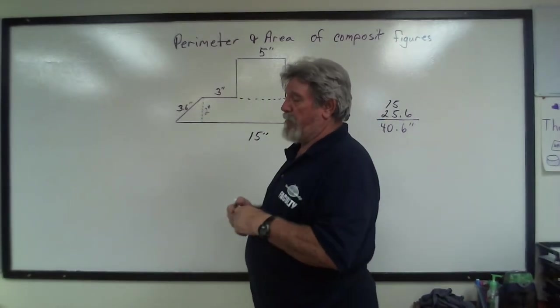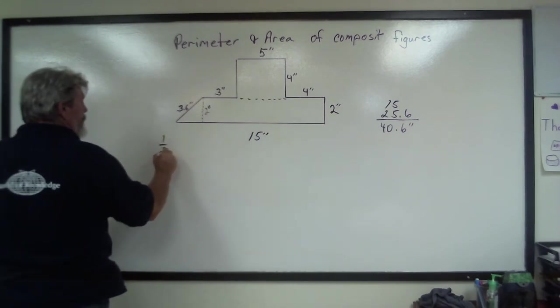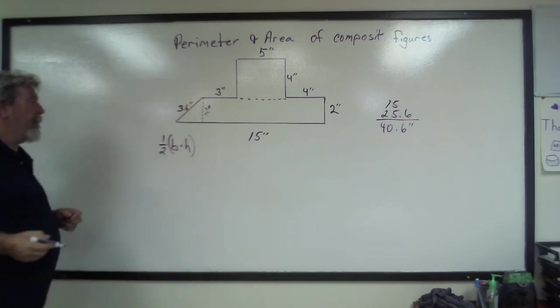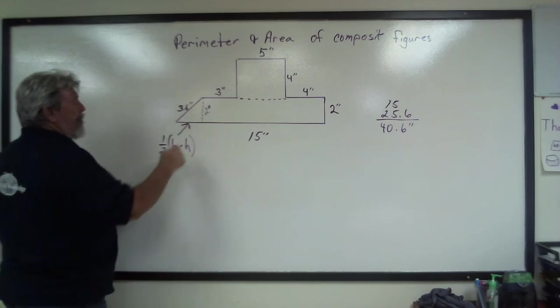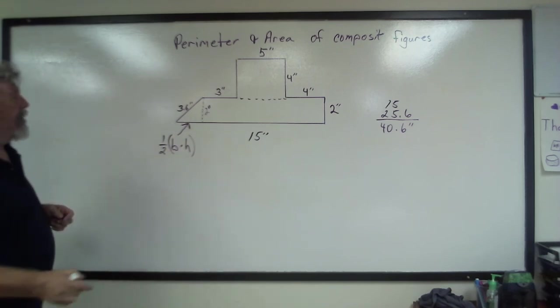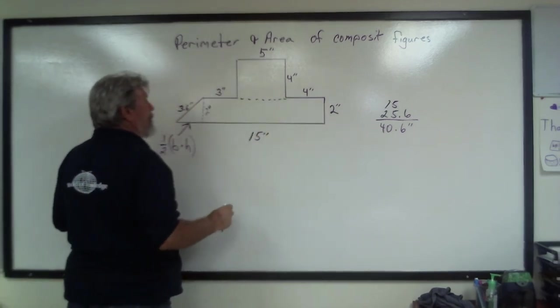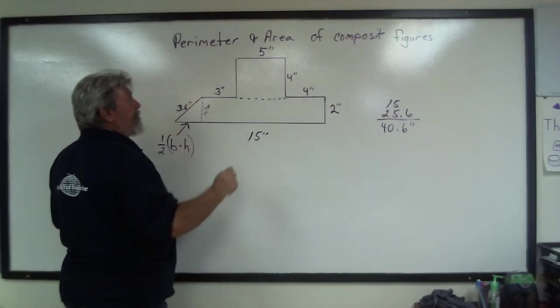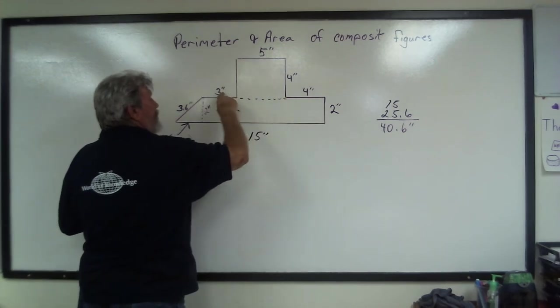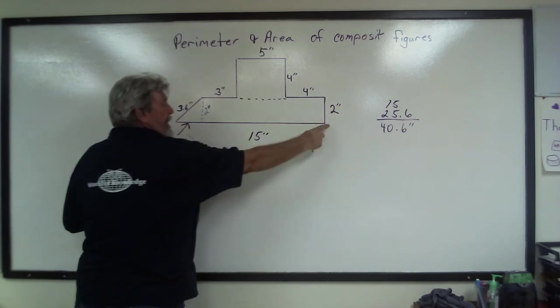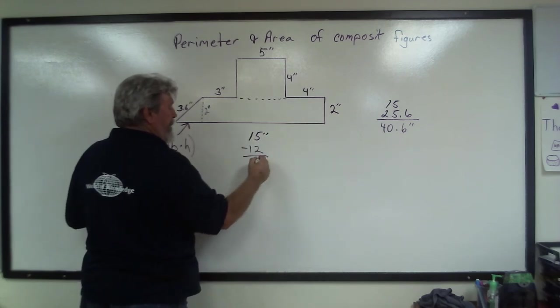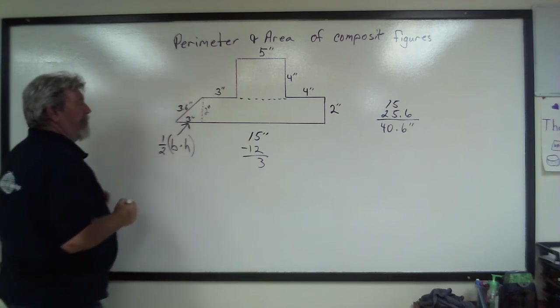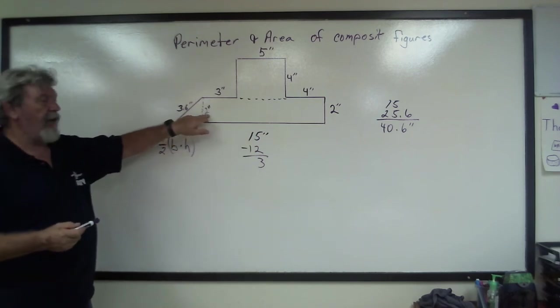Because the area for a triangle is one half, one half base times height. Well, we don't have the base here, so let's figure out what the base is. We know from here to here is the same as adding this, this, and this together. So we would have 5 plus 4 is 9 plus 3 is 12. Well, we know from here to here is 15, so we're going to subtract 12 from 15, and we get 3. So this measurement here is 3 inches. So now we have the base and the height.